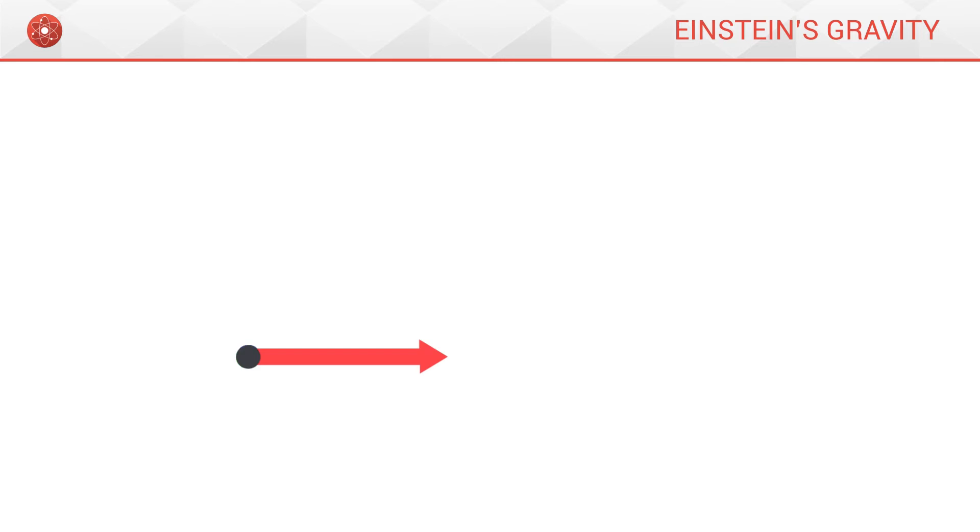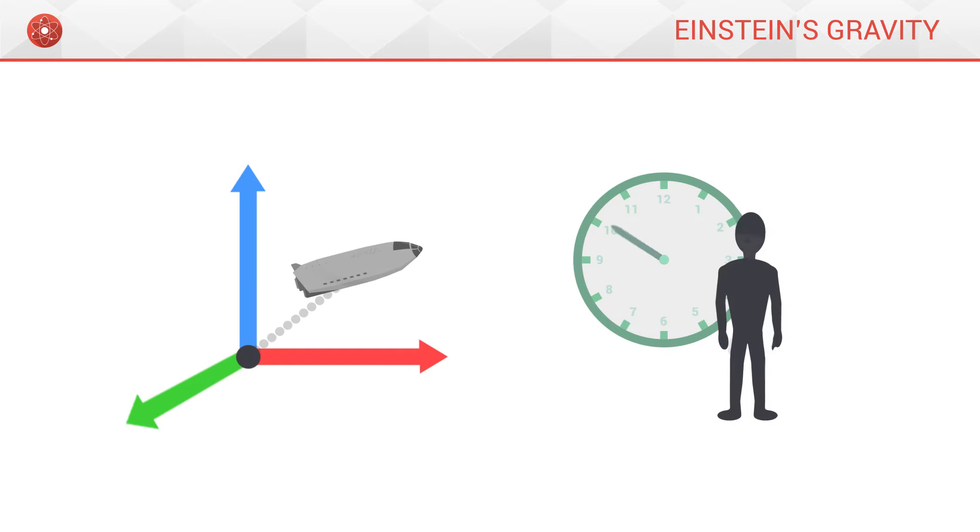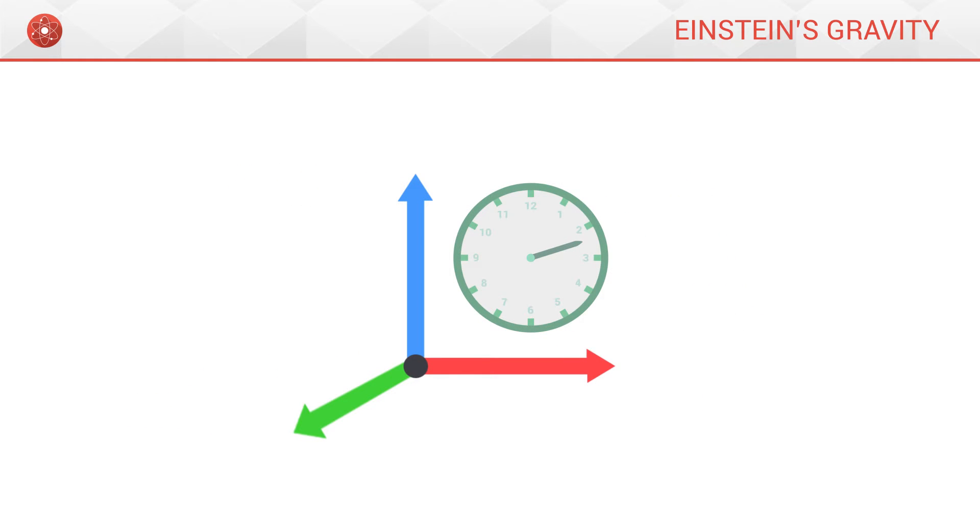For Einstein, the three dimensions of space in which we move, and time in which we evolve, are just two parts of a same thing: space-time.